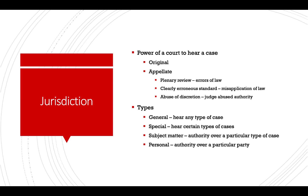Jurisdiction means the power of a court to hear a case. Courts can only hear certain cases — I can't go to just any court and file any case I want. As we talked about with district courts and appellate courts, there's original and appellate jurisdiction. Original jurisdiction means a court can hear a case for the first time — those are our district courts. Appellate jurisdiction means the courts are reviewing the decision of a lower court. They can review for errors of law — that's plenary review.